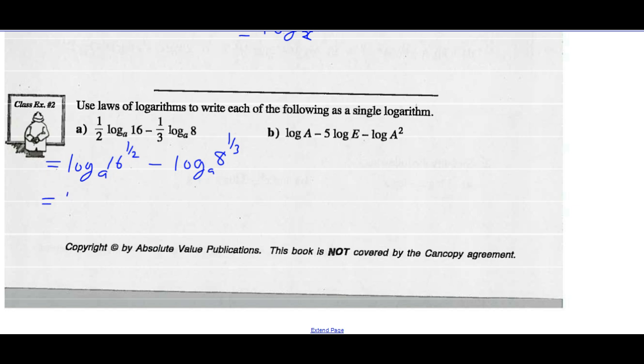This isn't the only way you could do it, but this is the way I chose to do it. I know that 16 to the exponent one-half is the same as saying the square root of 16, which is 4. And 8 to the exponent one-third is the same as saying the cube root of 8, which is 2. And I can use my quotient law and write this as a single logarithm, log base A of 4 divided by 2. So that gives me the log base A of 2.